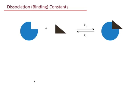Let's get into dissociation or binding constants. Dissociation constants are often called binding constants. What we're looking at is the binding of a ligand to a receptor. This little Pac-Man guy here we'll call the receptor and designate that R. The ligand, the little triangle, we'll designate L. And then the ligand-receptor complex is when they bind together. There's an equilibrium that's established when you combine receptor and ligand.